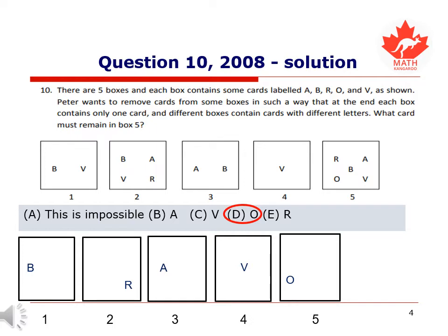Now with box two, we're only left with R, so that means R cannot exist in box five. Removing this last card from box five, we see the only card left in box five after applying this process is O. That means the answer to the question is D, O.